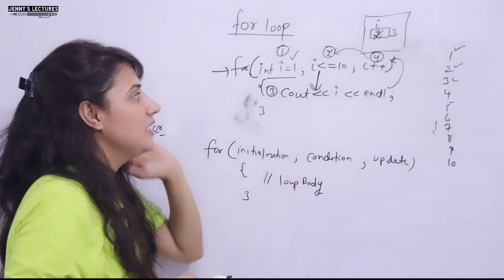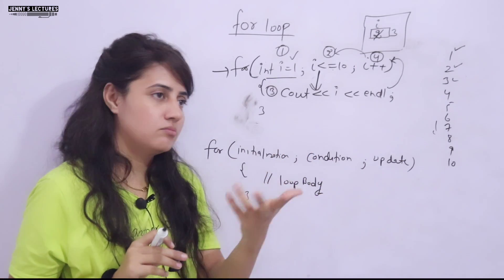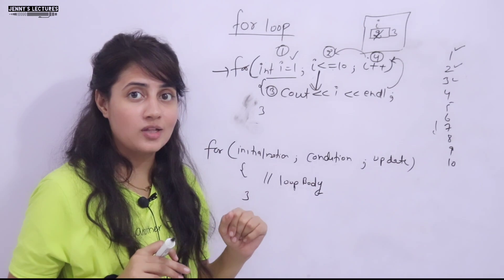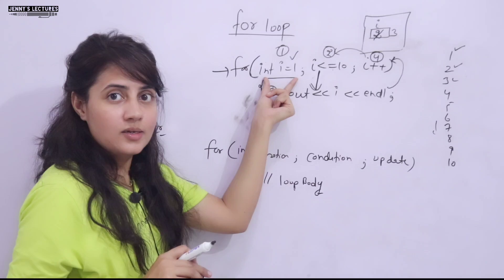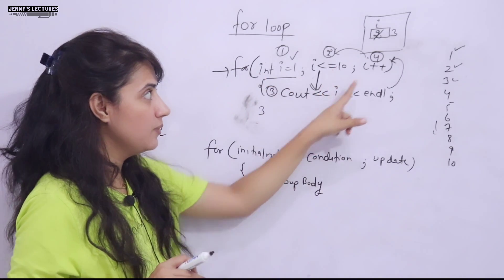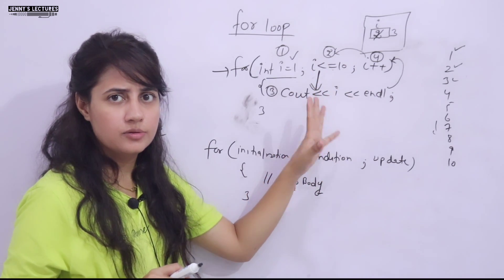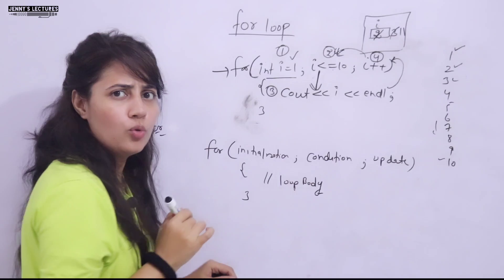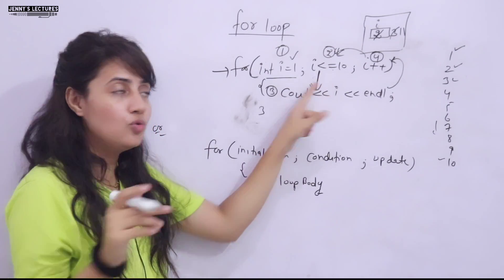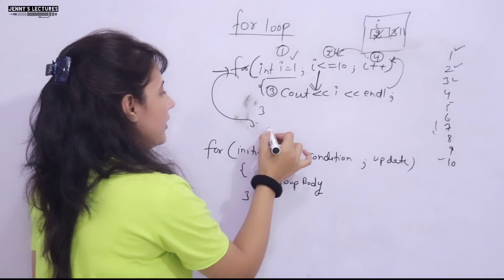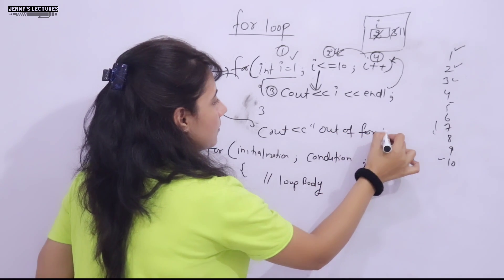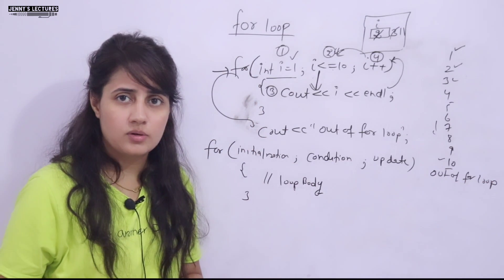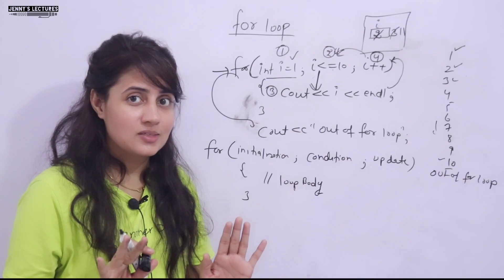One key point: how many times is the initialization statement executed in a for loop? Only once — initialization is not inside the loop. The condition check, loop body, and update are in the loop. When i becomes 10 and is printed, i++ makes it 11; now 11 <= 10 is false — condition fails, control exits the for loop. Any statement after the for loop, like cout << 'out of for loop', would then execute.